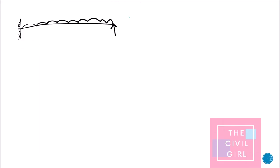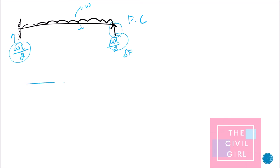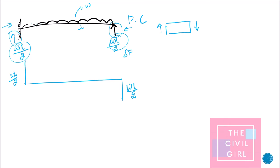Next question: this is a propped cantilever beam. For the shear force diagram you look at vertical forces. If this is W and this is L, then the reaction will be WL/2 at each end — both identical reactions are the same. The shear force from the left side is positive and equals WL/2. Since the load is a UDL, the shear force diagram varies linearly. Now coming to the bending moment diagram.